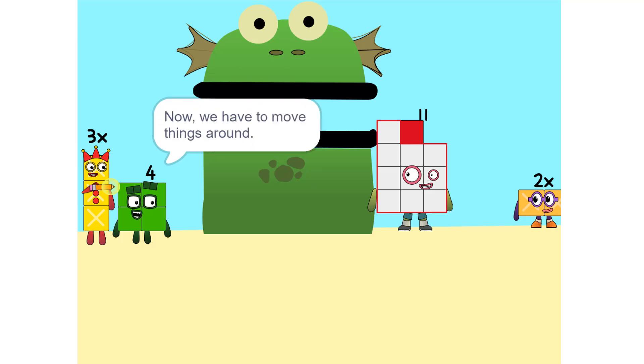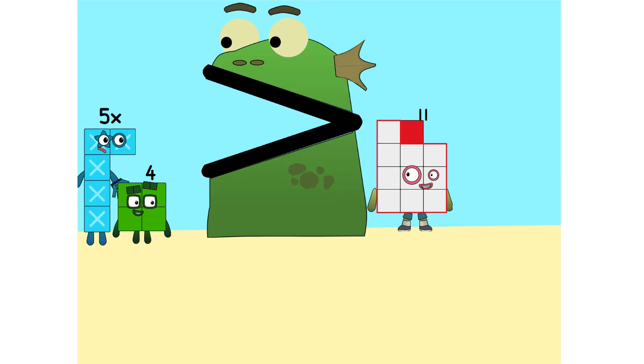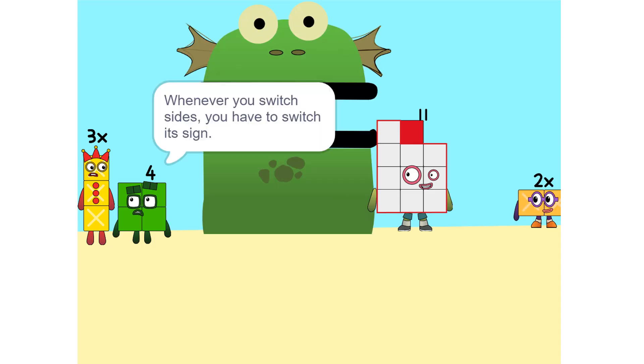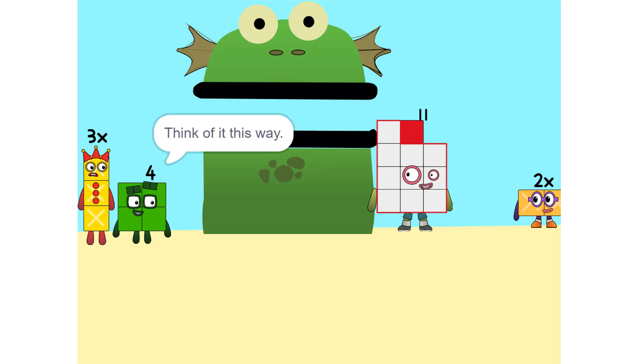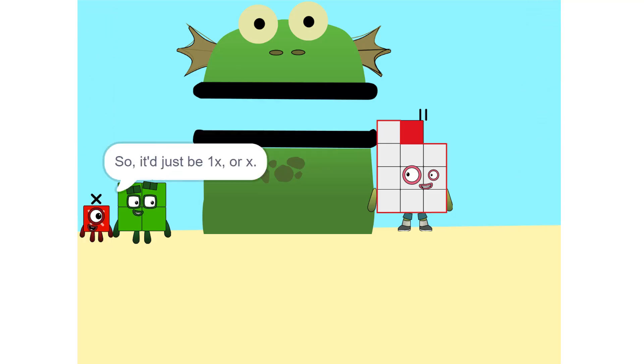Yeah. Now, we have to move things around. We have to move this 2X to this side. Oh. So, 5X. Stop. Whenever you switch sides, you have to switch its sign. So if it's positive, it becomes negative and vice versa. Why? Think of it this way. You're subtracting 2X from each side. Oh.